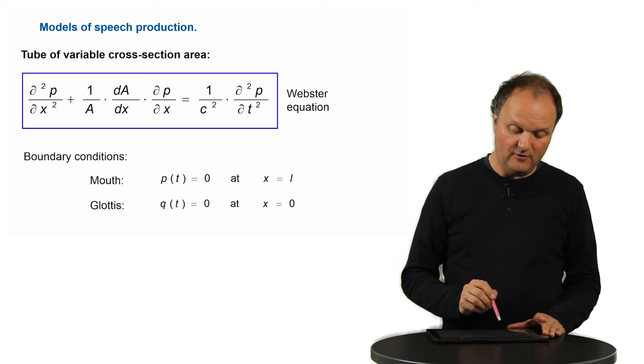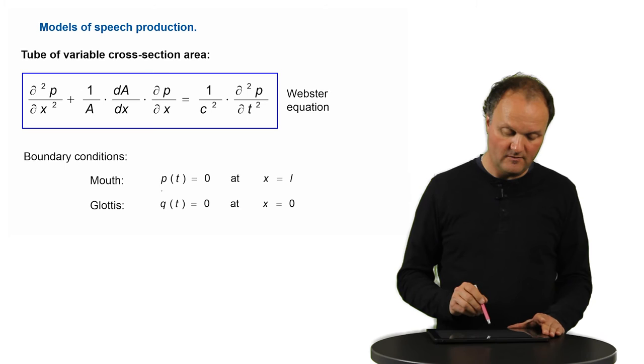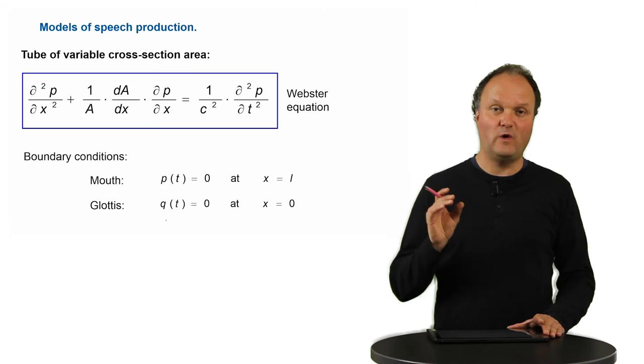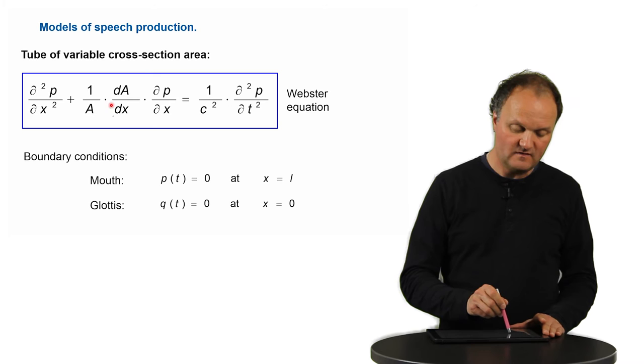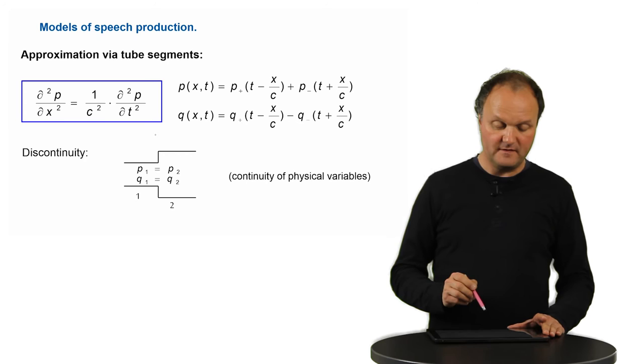And we have the two boundary conditions, namely that the sound pressure needs to be 0 at the mouth, and it needs to be maximum at the glottis at x over x equal to 0, and the equivalent for the sound velocity q, it's 0 at the glottis and its maximum at the mouth. If we assume one element only, then we can assume that within this element, this dA over dx will be 0, because the tube has a constant diameter. That means that this whole part here will vanish, and this simplifies the equation to this form which you see here.